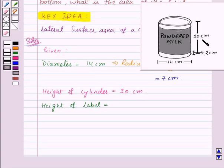That is 20 centimeters. So we will get the height of the label equal to 20 minus (2+2) centimeters, that is equal to 20 minus 4, that is 16 centimeters. Let us name it as capital H.